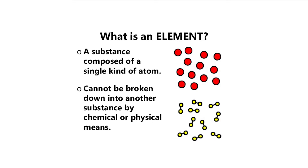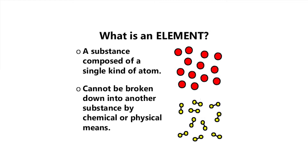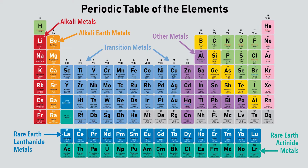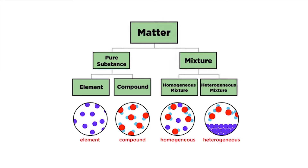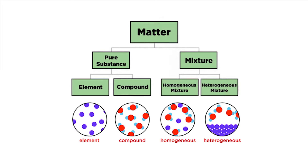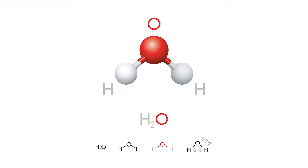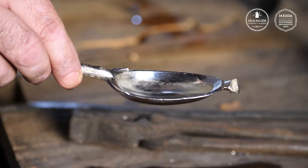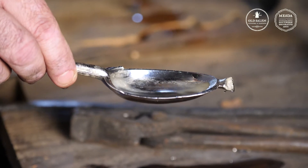Pewter is comprised of three different elements. Elements have been defined as the smallest pure particle that exists and are organized today as the periodic table. Each element has a unique atomic number from 1 through 118. When different elements combine, they form a compound of molecules. Water is a common example — a compound formed with two atoms of hydrogen and one atom of oxygen.